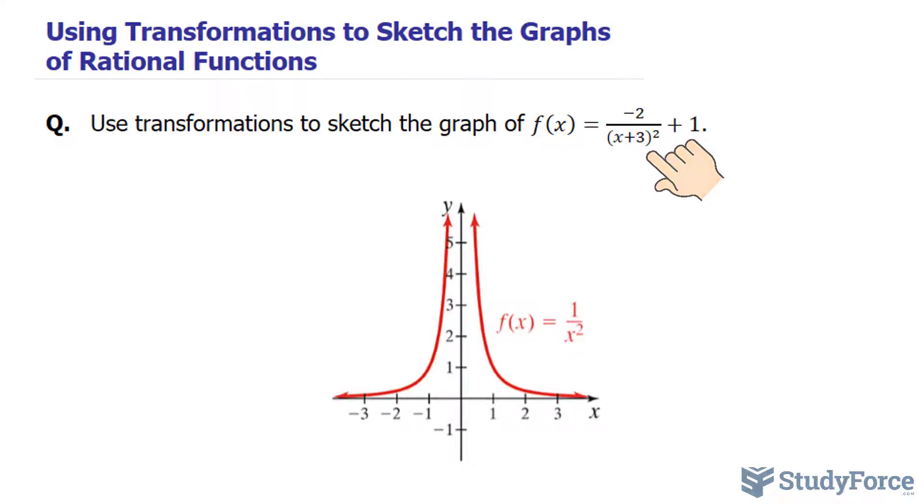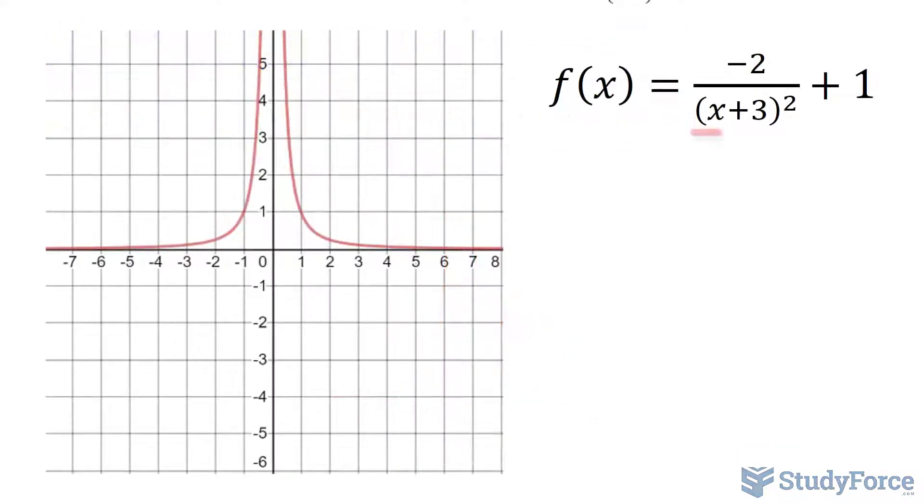So given that we have, in parentheses, x plus 3 raised to the power of 2, the first thing that I'll do is horizontally shift the graph of y equals 1 over x squared to the left 3 units to obtain the graph of y equals 1 over (x + 3) raised to the power of 2. Remember, when this part is positive, then we move to the left, and if it were negative, we would shift to the right.